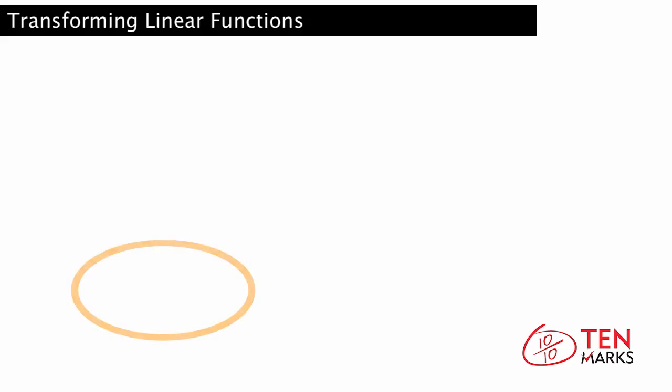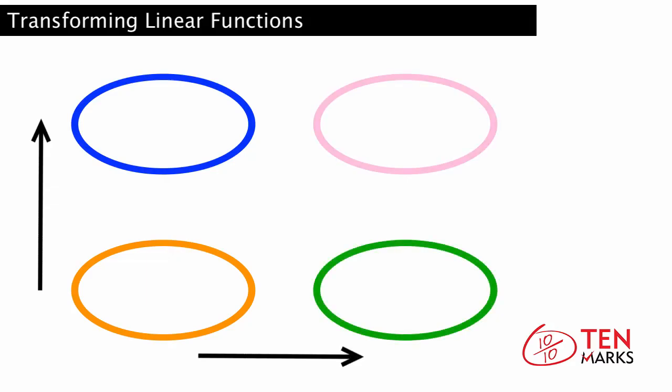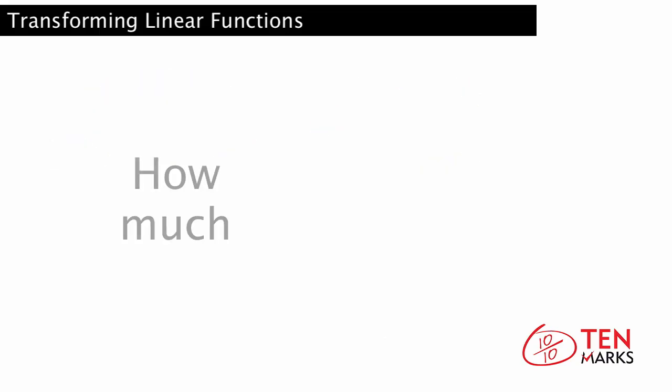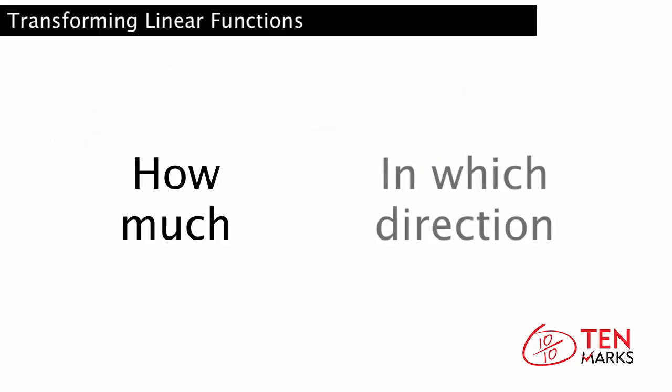Translation is a transformation in which the shape or size of the graph does not change. It's shifted vertically or horizontally, or both, by a particular number of units. The rule for a translation specifies how much a figure or line is shifted and in which direction.